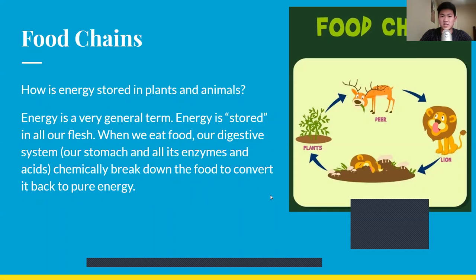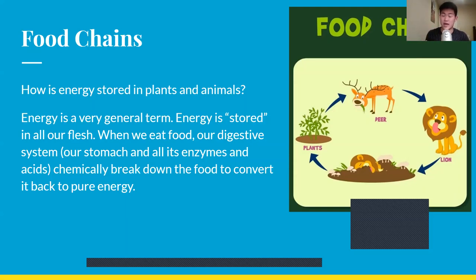How is energy stored in plants and animals? Energy is stored in all our flesh. When we eat food, our digestive system — our stomach and its enzymes and acids — chemically break down the food to convert it back into pure energy, which we use and also store in our body. When energy is stored in a plant and a deer eats the plant, it can get the energy stored in the plant's tissues.